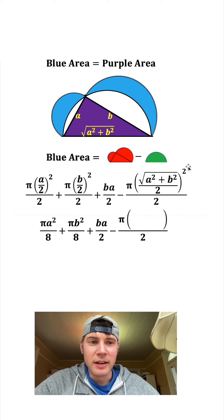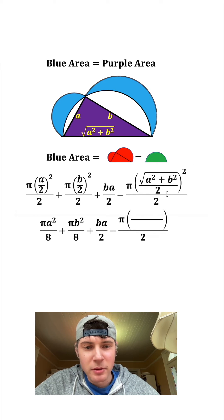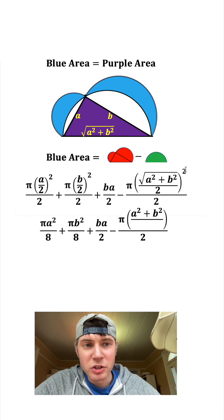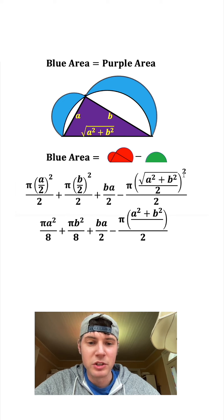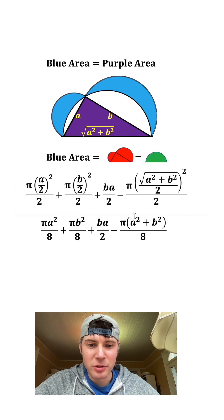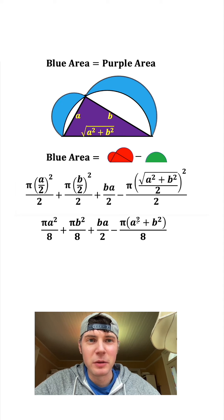We'll put the fraction bar in, and now we need to distribute this 2 to the top and to the bottom. When we distribute to the numerator, the square root is going to go away, so it's just A squared plus B squared. When we distribute to the 2, it's 2 squared, which is 4. And the 4 can join the 2 down here to become an 8. And then this pi can distribute to both of these, so we have pi A squared plus pi B squared.